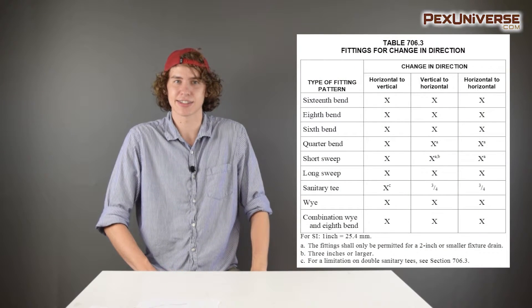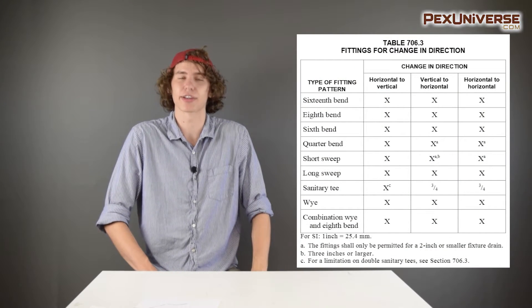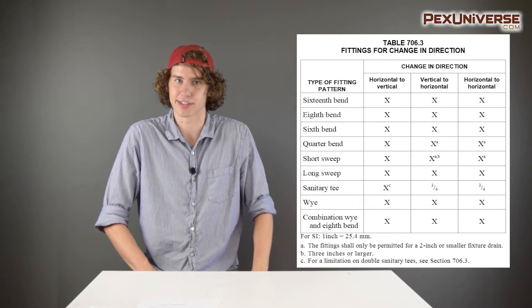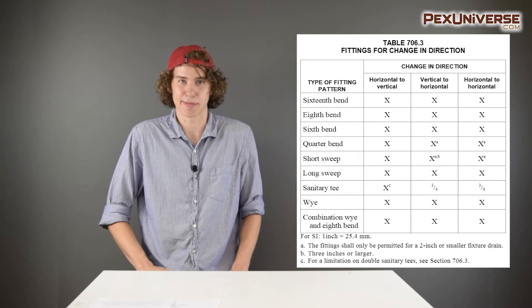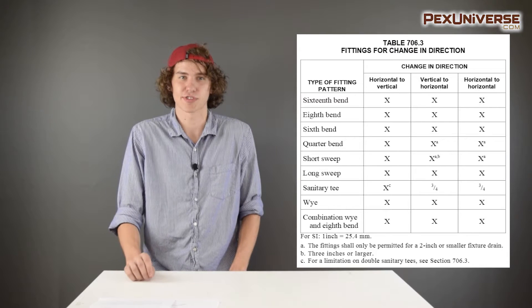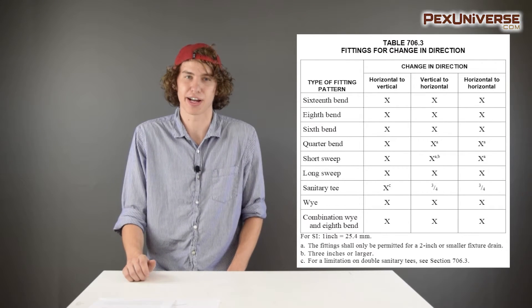You also have to be careful about what types of fittings you use on your drainage pipes. This one is pretty variable by location, but in general there are restrictions about using sanitary tees, short sweeps, quarter bends, and other specialty fittings in your drainage system. That's not to say that none of these fittings can be used, but the code dictates certain restrictions based on the pipe size and the direction of the joint.